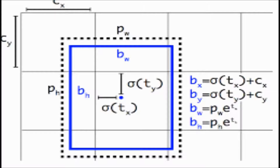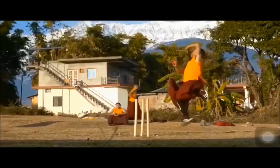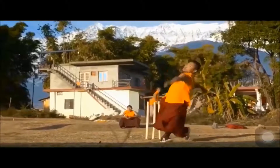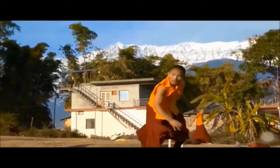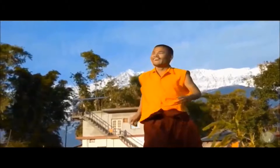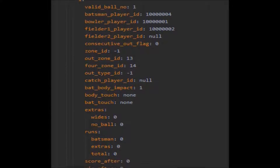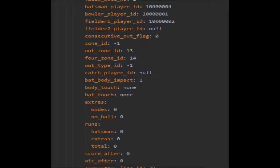All the cameras are coordinated in a well-planned and calculated way, through which we get to know whether the ball is bowled or not, and how many runs were scored on it, with all the other required information of the delivery.